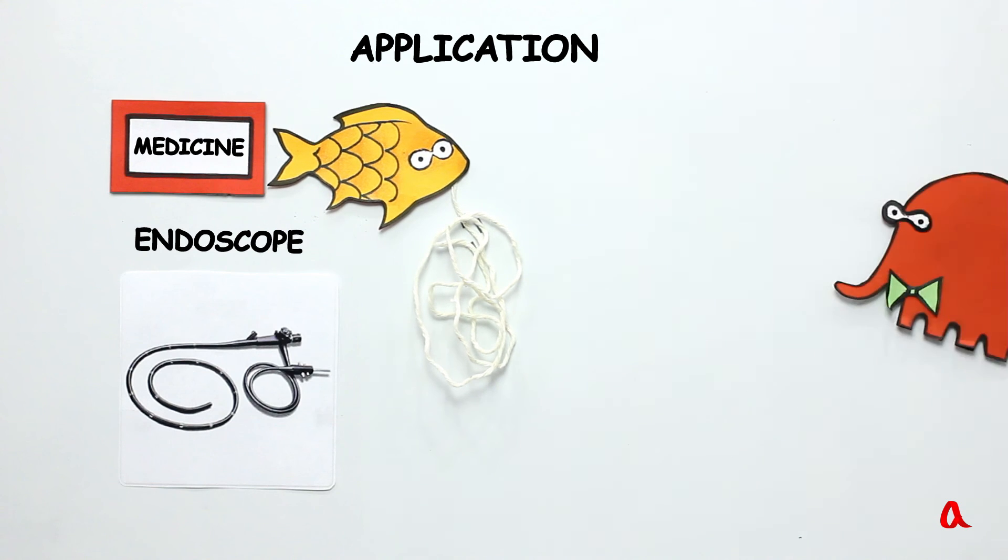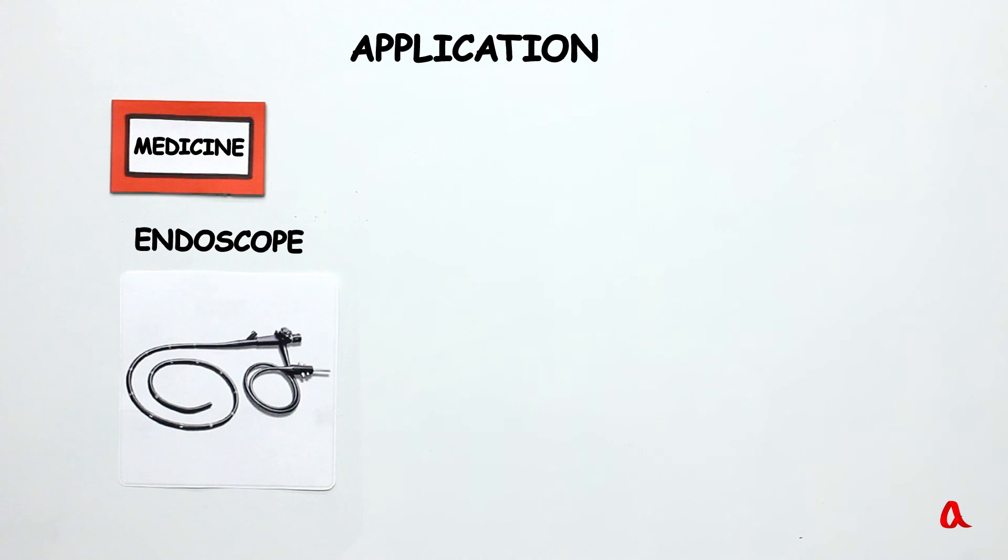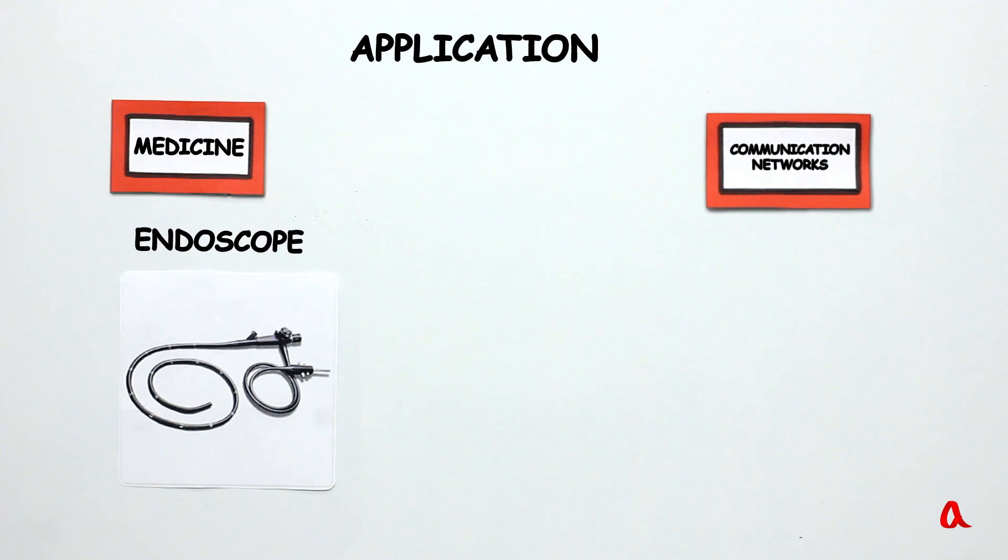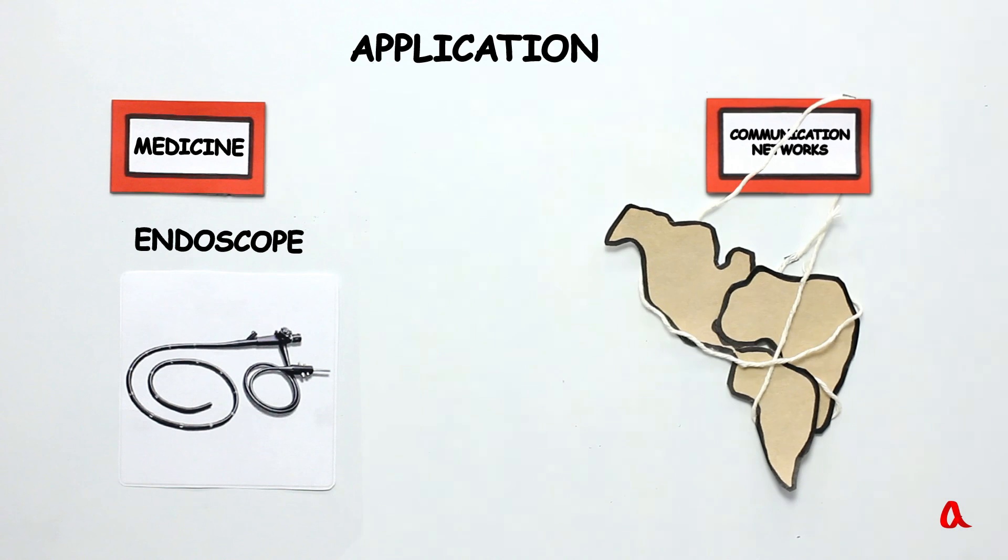Nowadays, the most important area of application of total internal reflection is fiber optic communication networks. Huge data can be rapidly transmitted through fiber optic cables covering great distances from continent to continent.